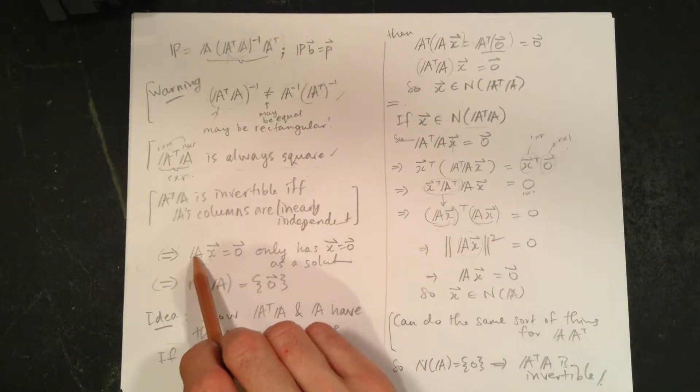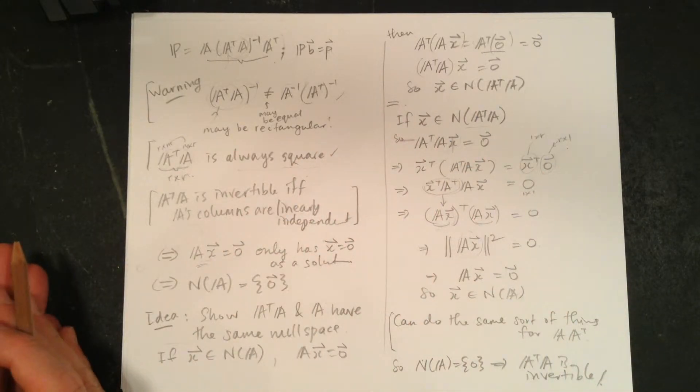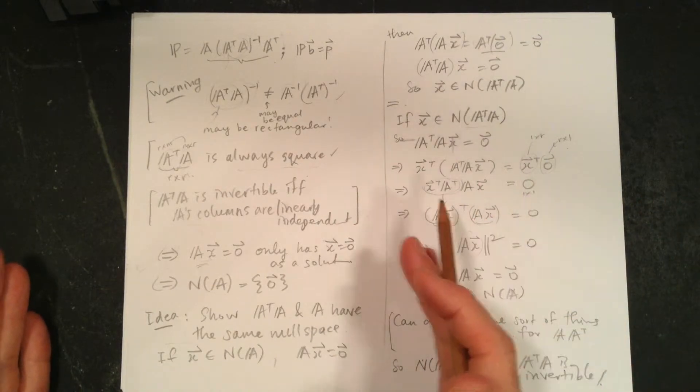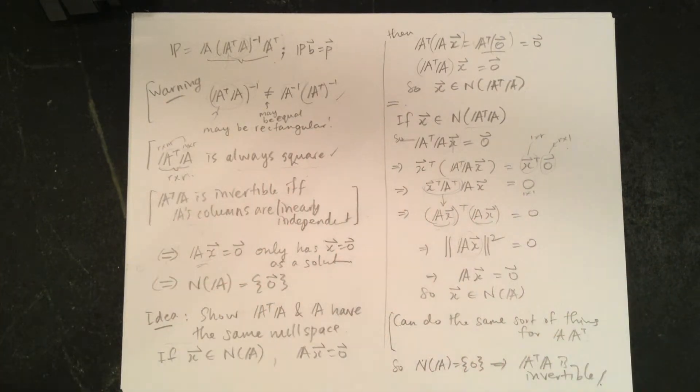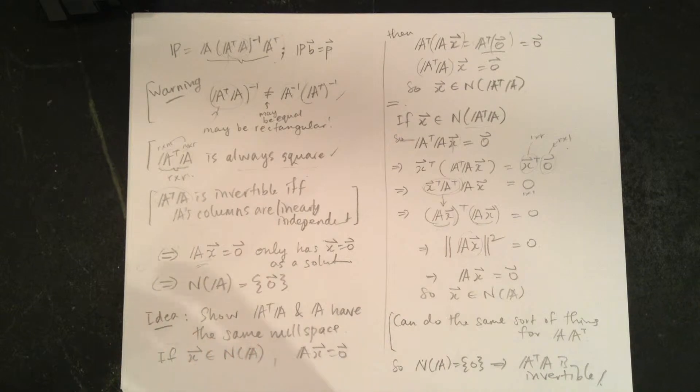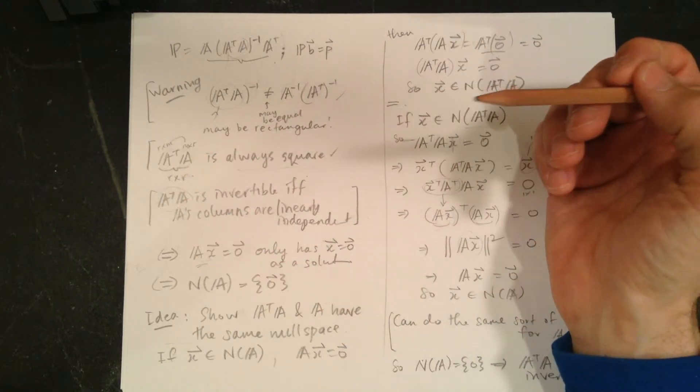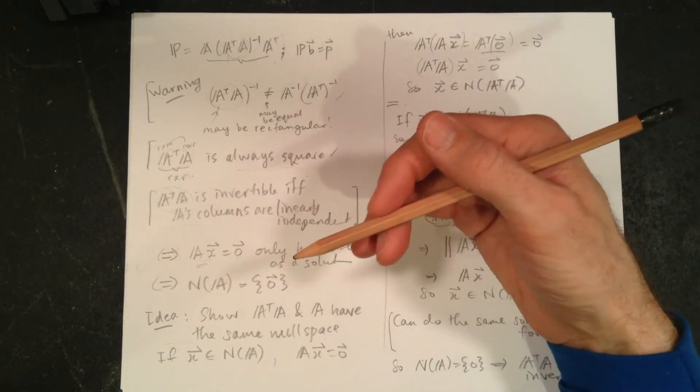The only solution to this question of how do you combine the columns of A to get 0 is to say I want 0 of this one, 0 of this one, 0 of this one - they're linearly independent. So we're going to show that A transpose A's null space is the same as A's. If the null space of A is 0, then that's going to be the same for A transpose A. We have to do two things: show that if X is in A's null space, it's in A transpose A's null space, and the other way around.